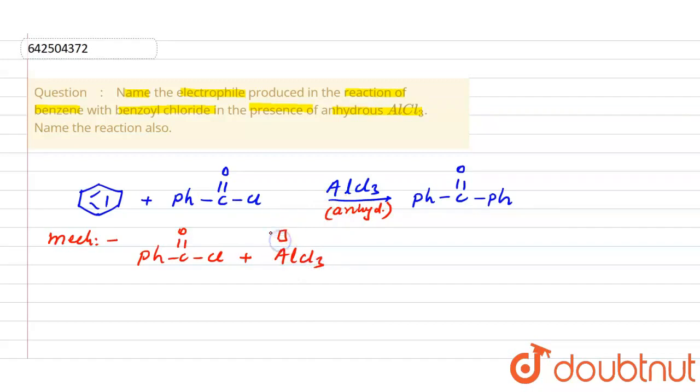Now aluminum has a vacant orbital and chlorine has a lone pair. So this chlorine can donate its lone pair to this vacant orbital. And because of that, this bond will break and this bonded pair will be taken by chlorine. In that way, the electrophile will be formed as Ph-C double bond O positive charge. So this is the electrophile that is forming. And along with that it is forming AlCl4 negative.